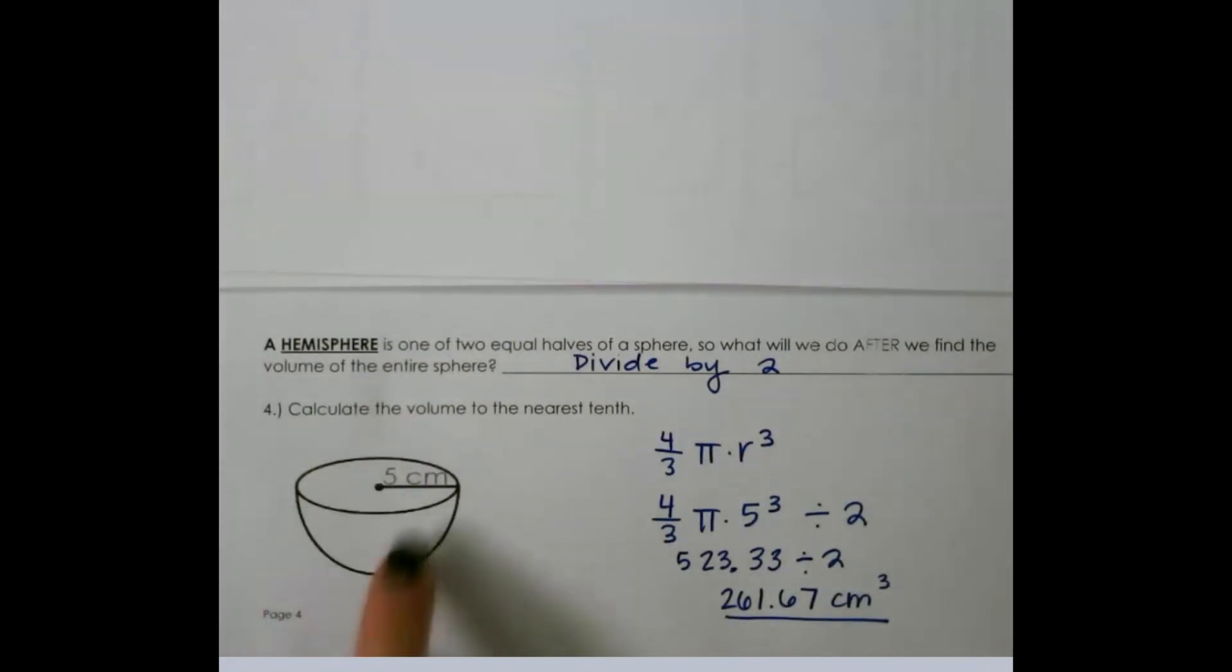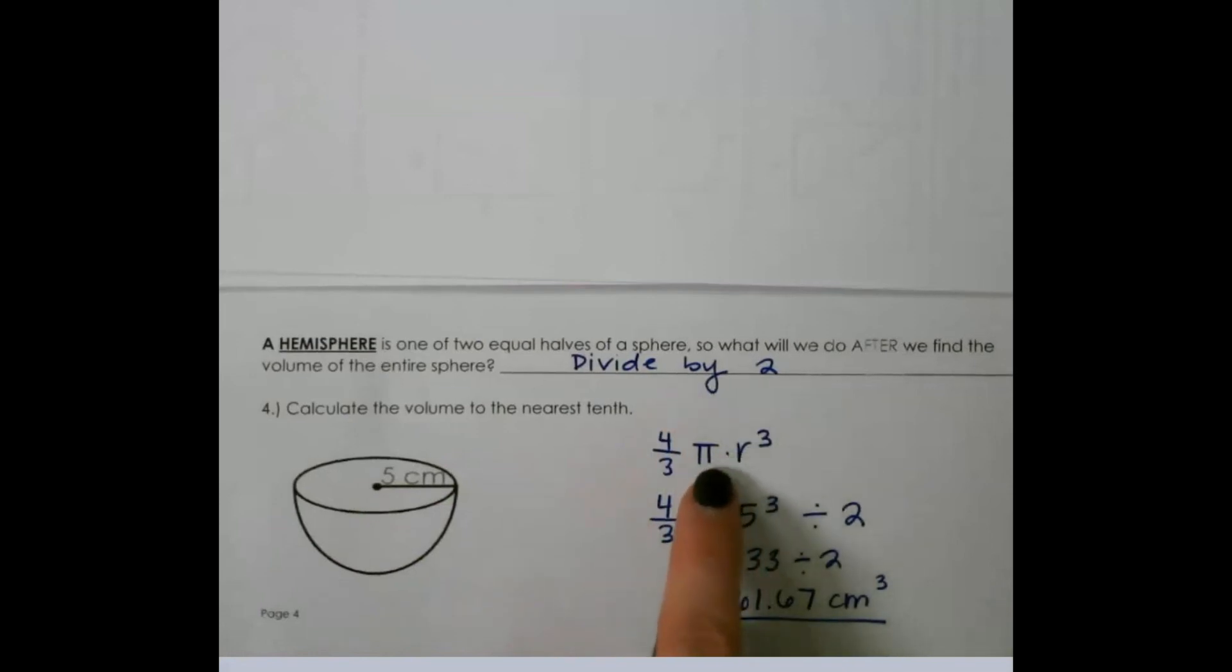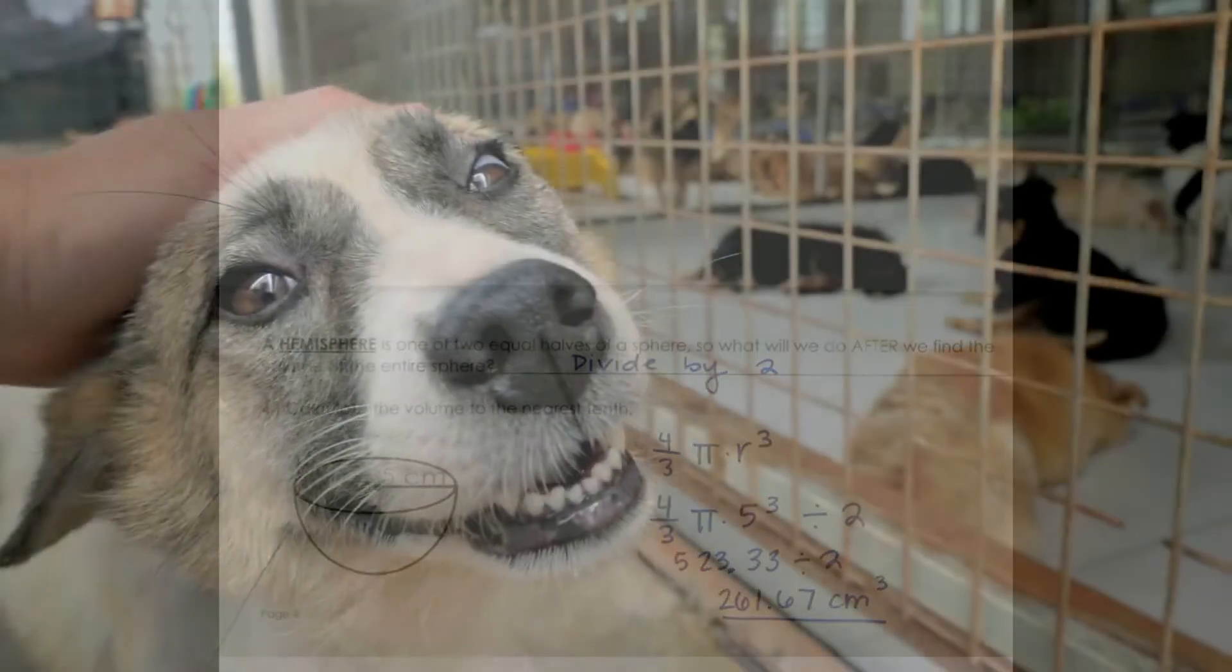So just remember, when you're looking at a hemisphere, always remember to divide by two. Take your regular sphere formula and divide it by two at the end. Thank you.